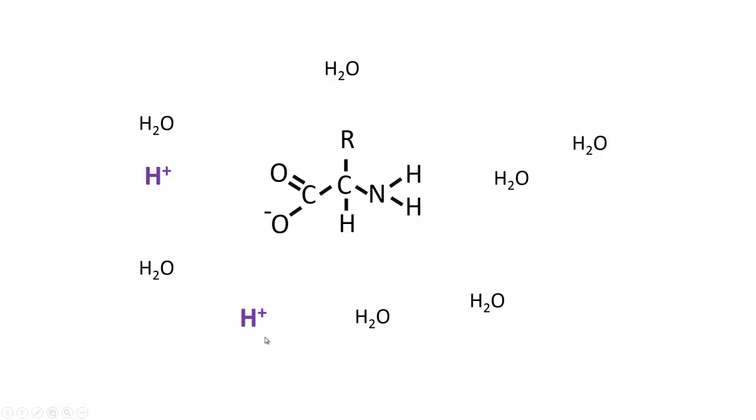So each end of the amino acid, and therefore each end of a protein, can either add hydrogen ions to the solution in case the solution becomes basic, or, like we saw previously with this nitrogen here, it can remove excess hydrogen ions from solution in case the solution becomes too acidic.